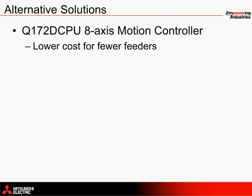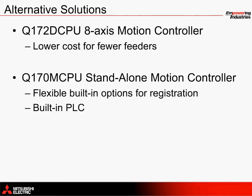Alternative motion solutions available from Mitsubishi Electric include the Q172 DCPU and Q170M CPU motion controllers. The Q172 DCPU can be used for control of up to eight servo axes, which reduces the cost for machines with fewer feeders. The Q170M CPU 16-axis stand-alone motion controller can be used in a similar way and includes a built-in PLC, and also offers flexible built-in options for mark sensor registration, which may be extremely beneficial in applications where card placement accuracy on the sorter axis is more critical.